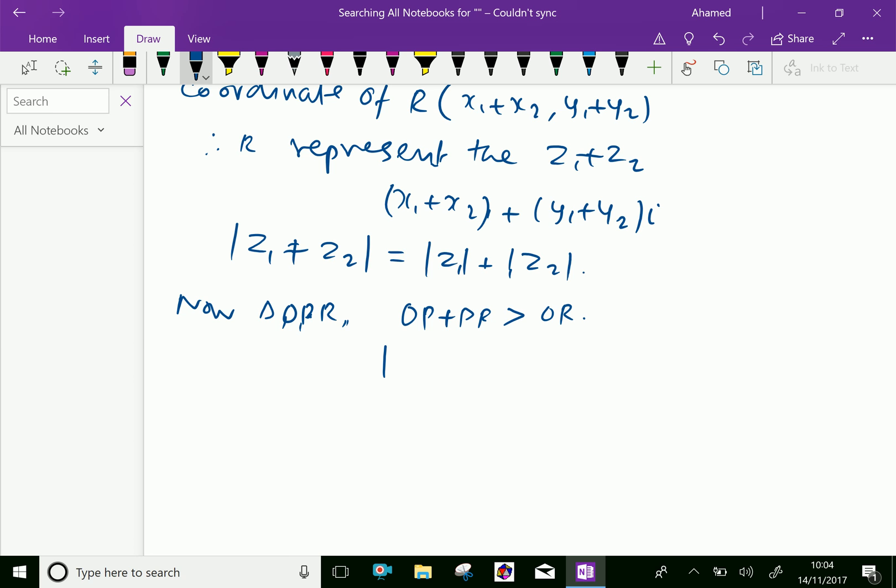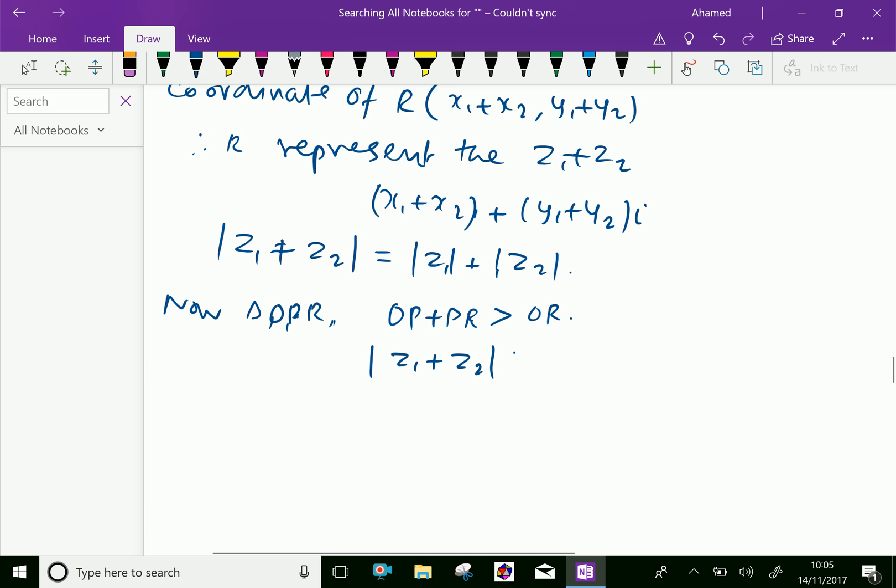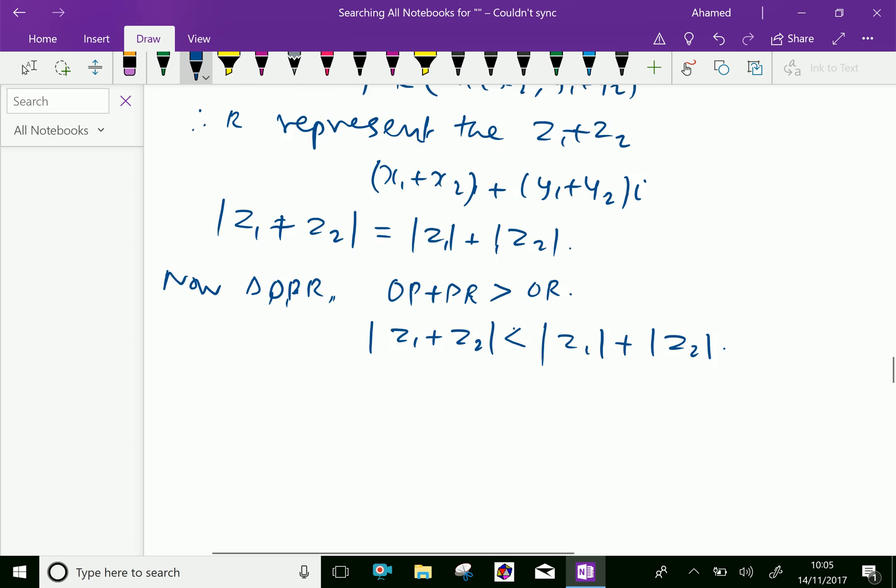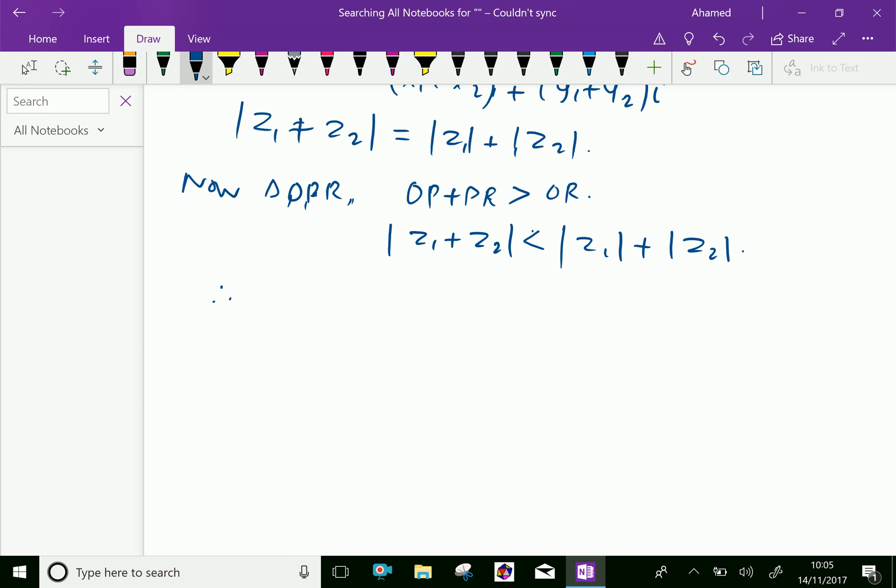We have OP is |z₁| and PR is |z₂|, which is greater than OR, where OR is |z₁ + z₂|. Therefore, |z₁ + z₂| < |z₁| + |z₂|.